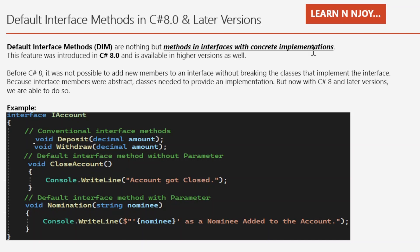Before C# 8, it was not possible to add new members to an interface without breaking the classes that implement that interface, because interface members were abstract and classes needed to provide an implementation. But now with C# 8 and later versions, we are able to do so. Let's understand it with the help of an example.